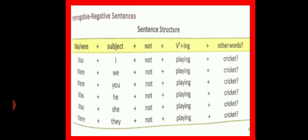Next is negative interrogative - the sentence is both a question and negative. Was I not playing cricket, were we not playing cricket. The sentence structure will be the same: was or were plus subject plus not. We've given it interrogative form by placing was or were first, and converted it to negative form by adding not.